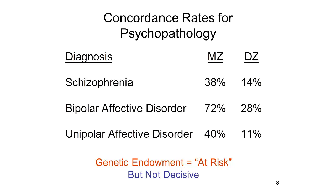Although it's not quite right, it's easy to think about the diathesis factor as a genetic predisposition to some form of mental illness. And indeed, twin studies show that, at least for some forms of mental illness, the concordance rate for mental illness is higher in monozygotic twins, identical twins, than it is in dizygotic twins, or fraternal twins.